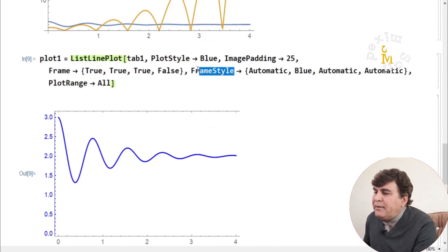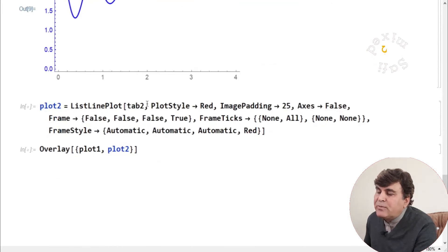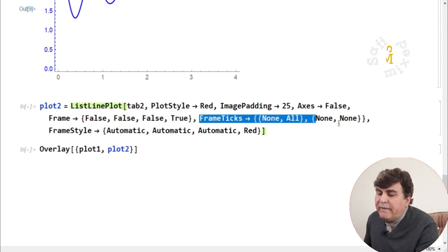If I replot the data in table 2, which corresponds to the G function, through the ListLinePlot and similarly choose the PlotStyle red, image padding the same, Axes false, Frame false, false, false, true. The three which were true in the previous case are now false, and the fourth which was false in the previous case is now true. FrameTicks - you can adjust these things as you wish.